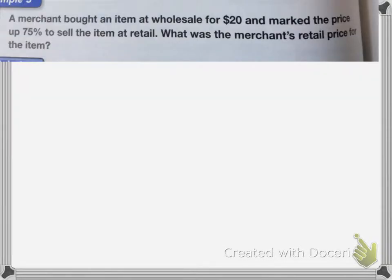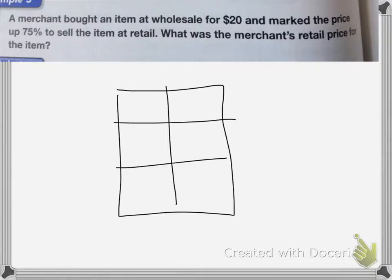This last one, a merchant bought an item at wholesale for $20 and marked the price up 75% to sell the item at retail. What was the merchant's retail price for the item? Draw your ratio box. We have our original wholesale amount, so we're going to put W, with a plus change because he's marking it up. Marked up the price 75%, and then my new price.